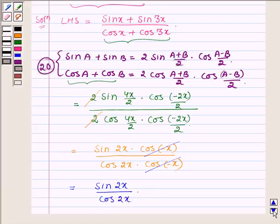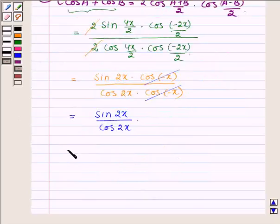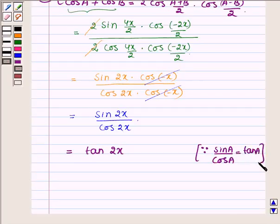And since sin 2x upon cos 2x is equal to tan 2x.